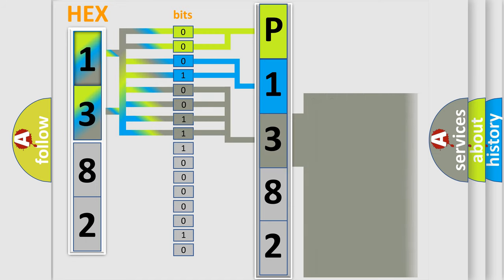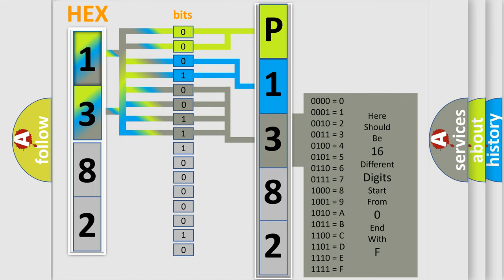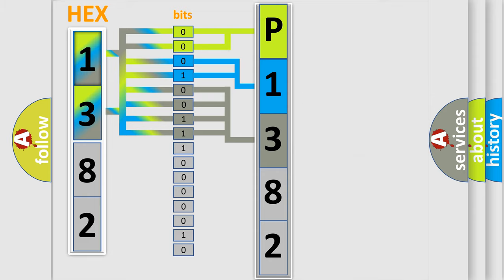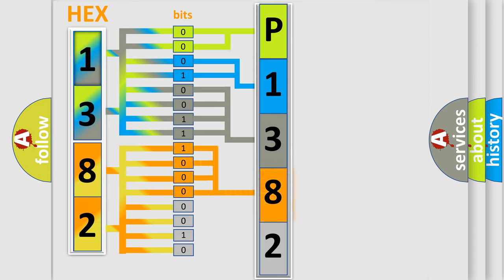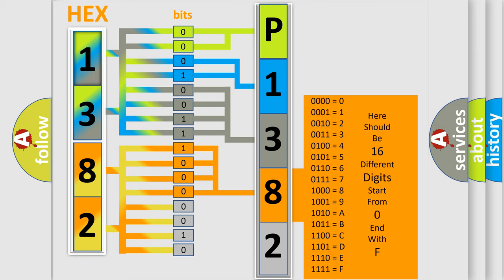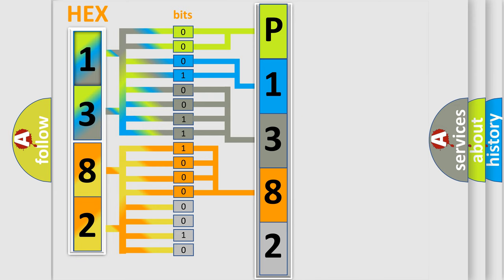The second byte is composed of a combination of eight bits. The first four bits determine the fourth character of the code, and the combination of the last four bits defines the fifth character. A single byte conceals 256 possible combinations.